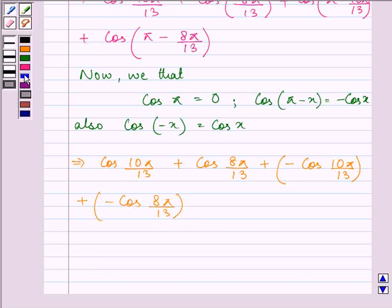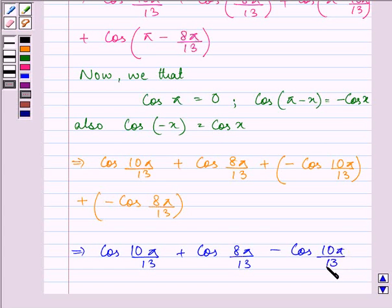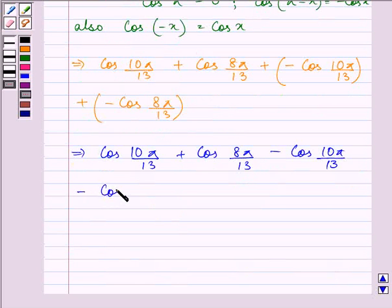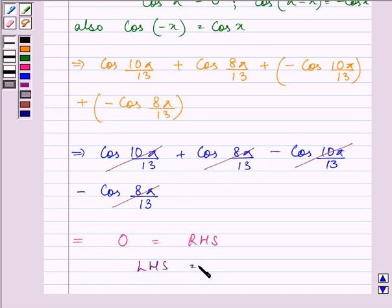Now, on opening the brackets, we have cos 10π/13 plus cos 8π/13 minus cos 10π/13 minus cos 8π/13. And now, I think you must be realizing that you have reached your answer as this will get cancelled out with this one and this will get cancelled out with this one. And you are left with the answer 0 that is equal to your RHS. So LHS is equal to RHS.